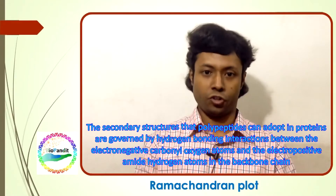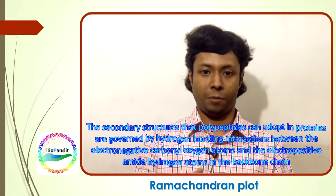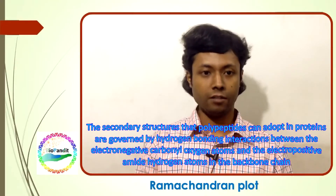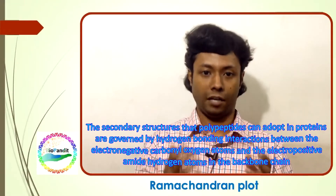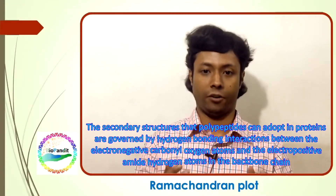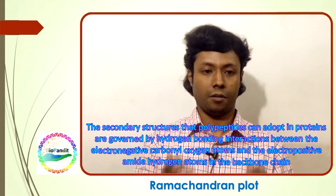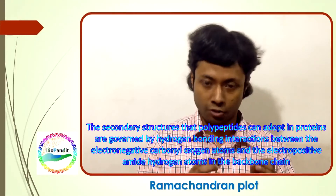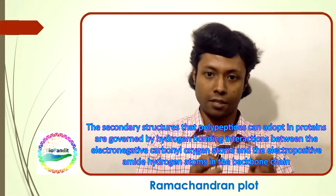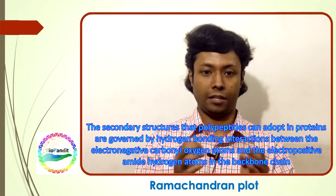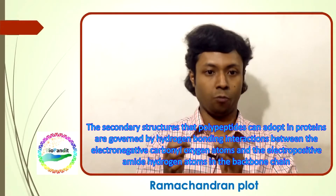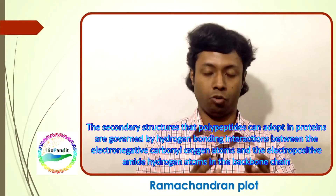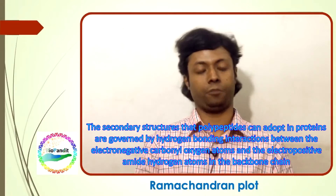The secondary structures that polypeptides can adopt in proteins are governed by hydrogen bonding interactions between the electronegative carbonyl oxygen atoms and the electropositive amide hydrogen atoms in the backbone chains of the protein molecule.